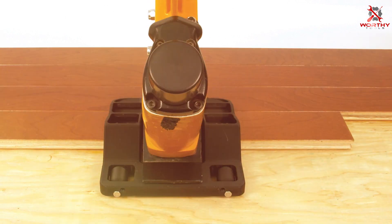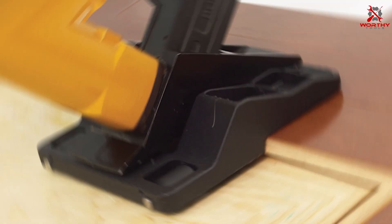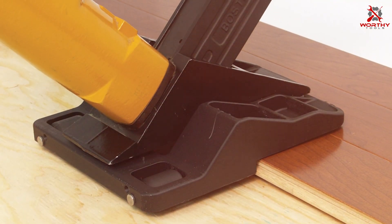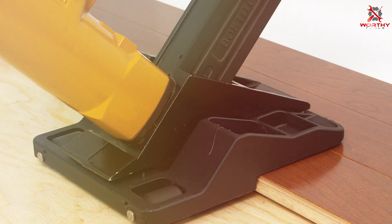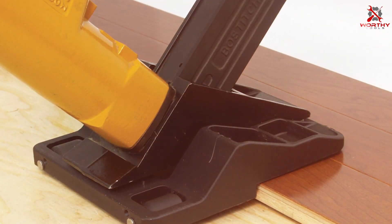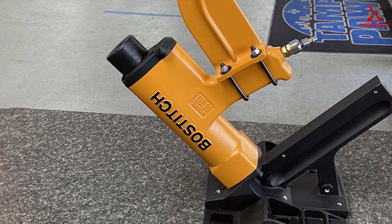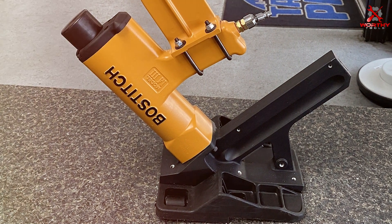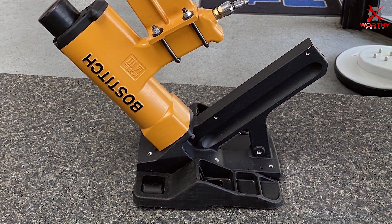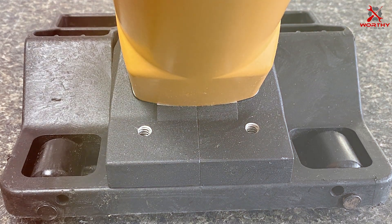In terms of design, the BTFAFOOTG2 showcases BOSTITCH's focus on user-centric innovation. The rolling mechanism is smooth and reliable, gliding effortlessly across different flooring types. Its construction is solid, reflecting BOSTITCH's reputation for durable, long-lasting tools. This accessory is particularly useful for professionals who handle large-scale projects, as it significantly speeds up the installation process.